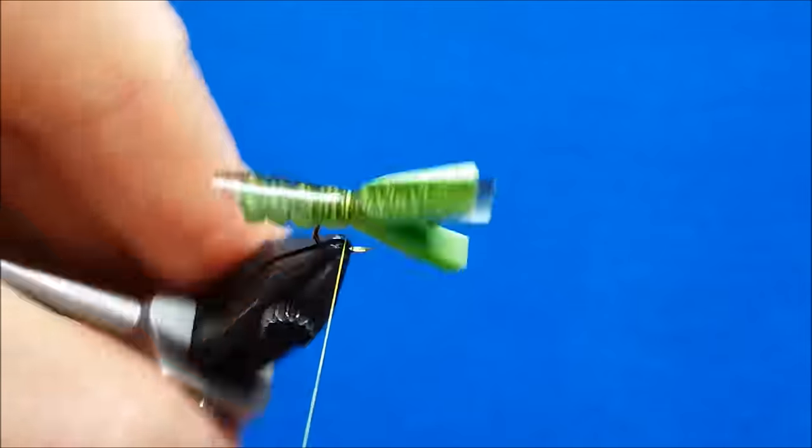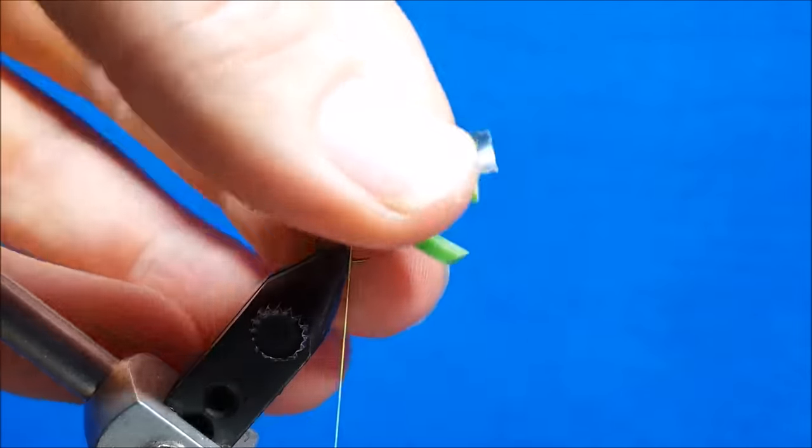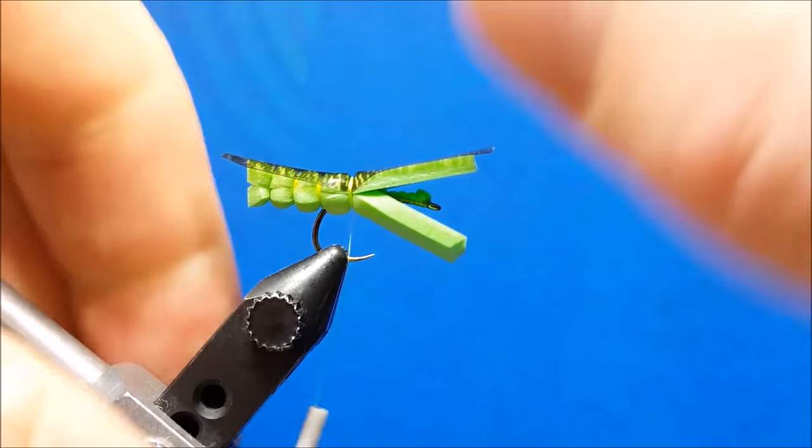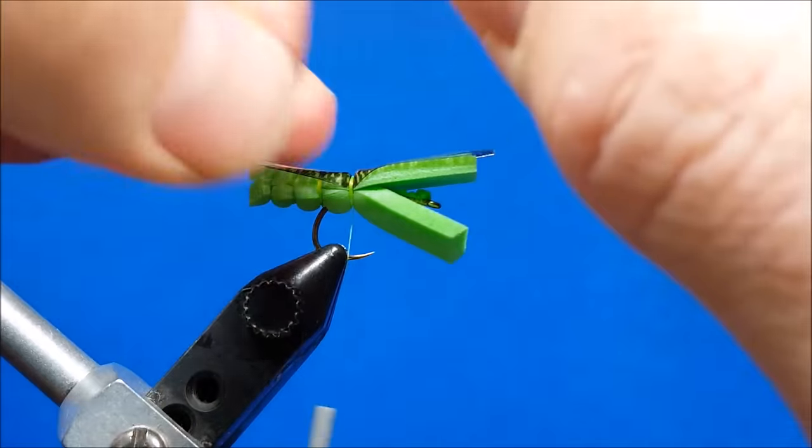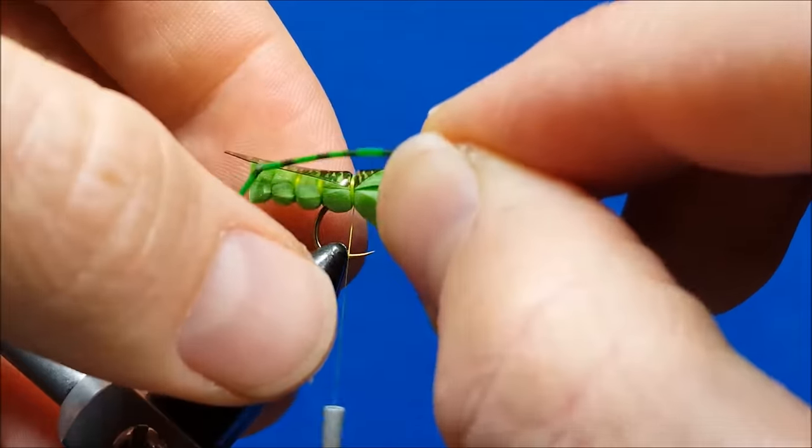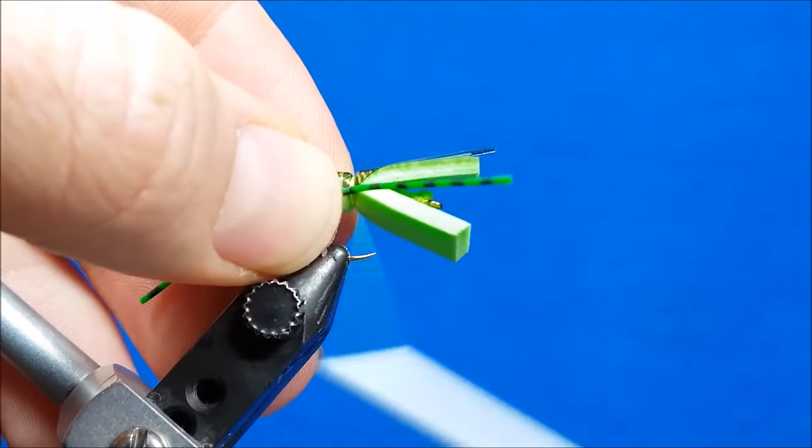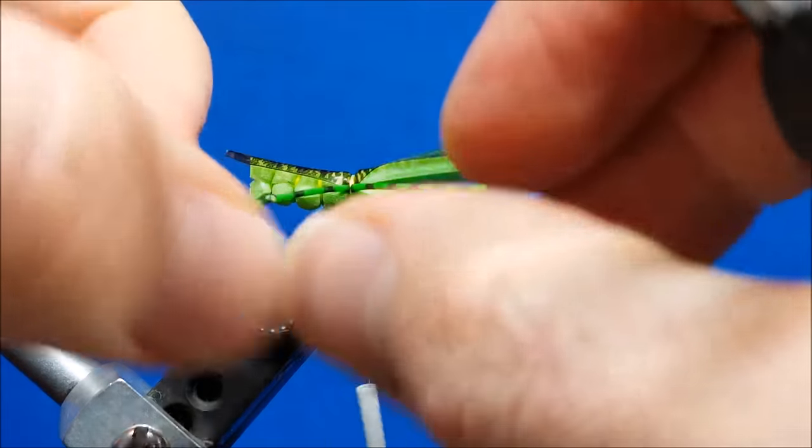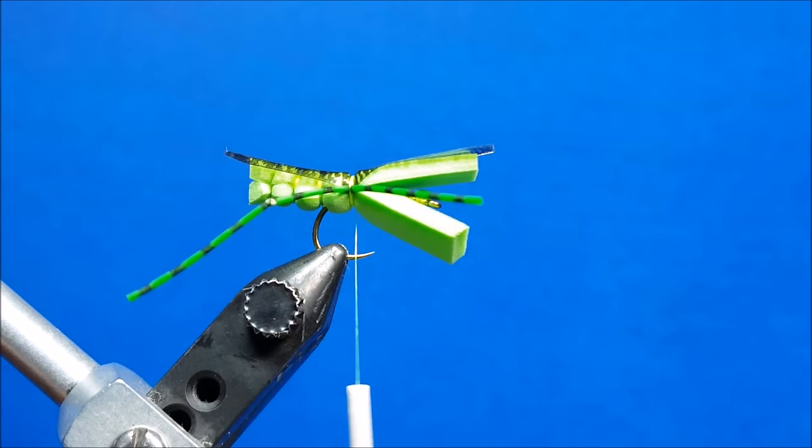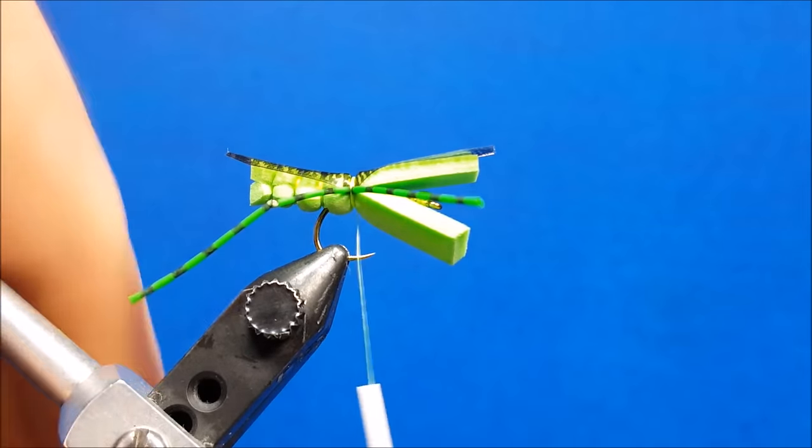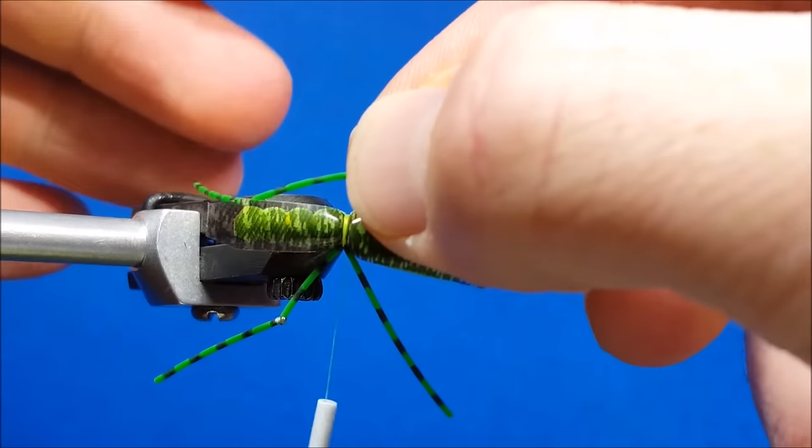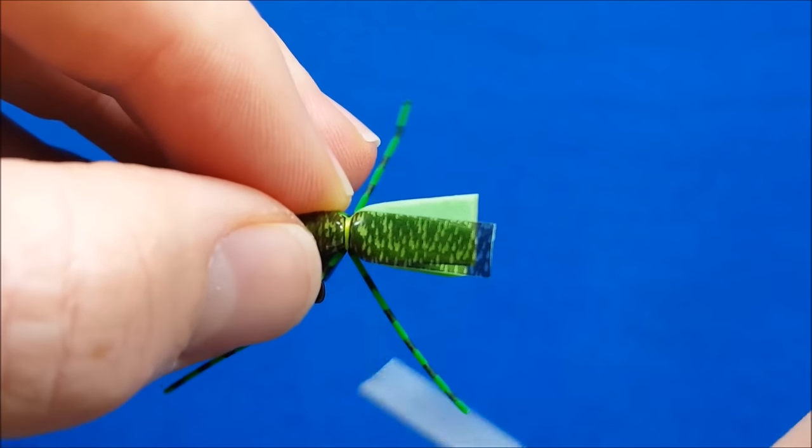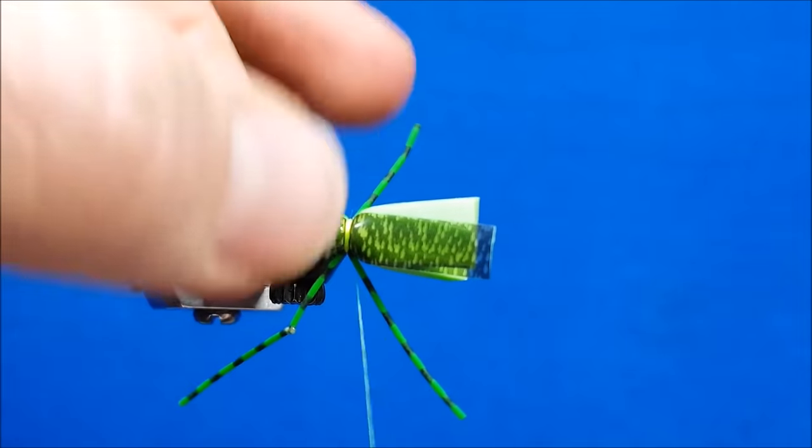At that same point there, I'm going to also tie in my rear legs. Since this is a smaller size, I use just a single strand of medium round rubber, chartreuse in this case. For the larger patterns, once I get up to like a size eight and a size six with this hopper, I'll double strand it together to give that leg a little thicker profile and to sit out away from the body a little bit farther. Tie that in on that side, bring it back. I want the joint on this leg to hit about the butt end of the abdomen.